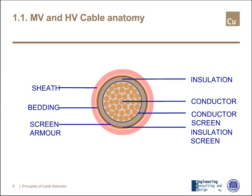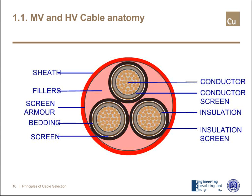Moving to medium voltage and high voltage cables, the structure is still very similar. The core is the conductor. I have the insulation, which plays a much more important role than for low voltage cables. I have a sheath practically every time, a bedding, and I have a screen and an armor. Additionally, I can have a conductor screen and/or an insulation screen, typically made by semiconductive material. This applies to both single-core and multi-core configurations.